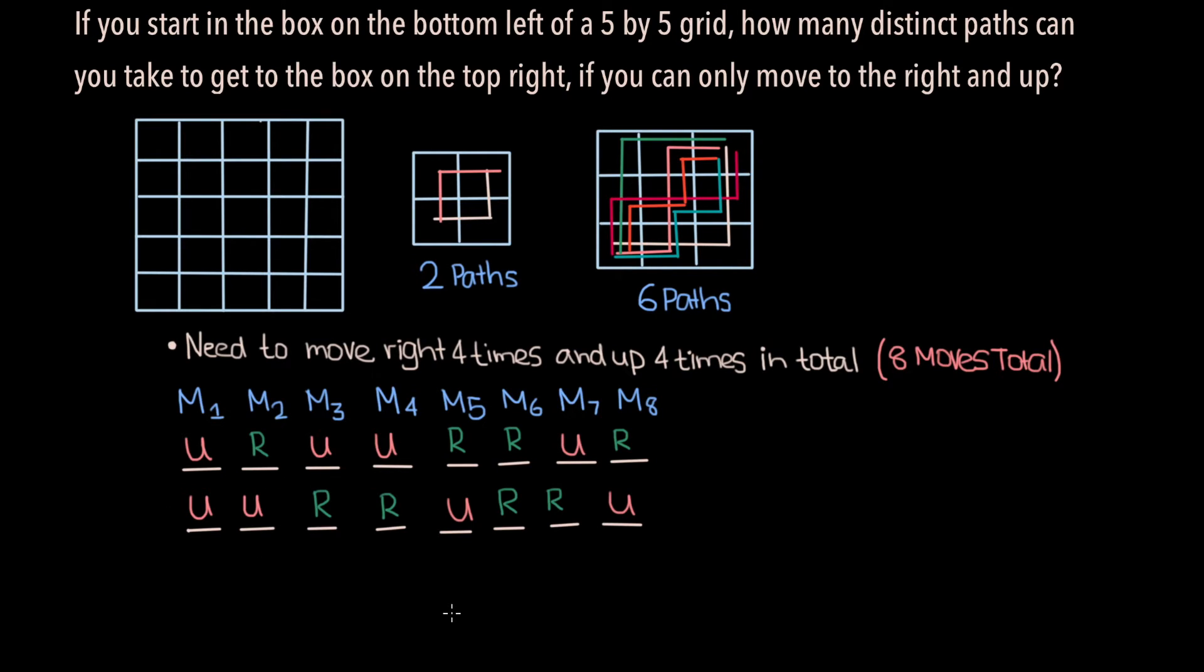And so essentially, this becomes a problem of finding out the number of ways to choose 4 spots out of 8 to move up in, as the remaining spots are guaranteed to be moved to the right. So the total number of distinct paths is nothing but 8 choose 4 or 70.